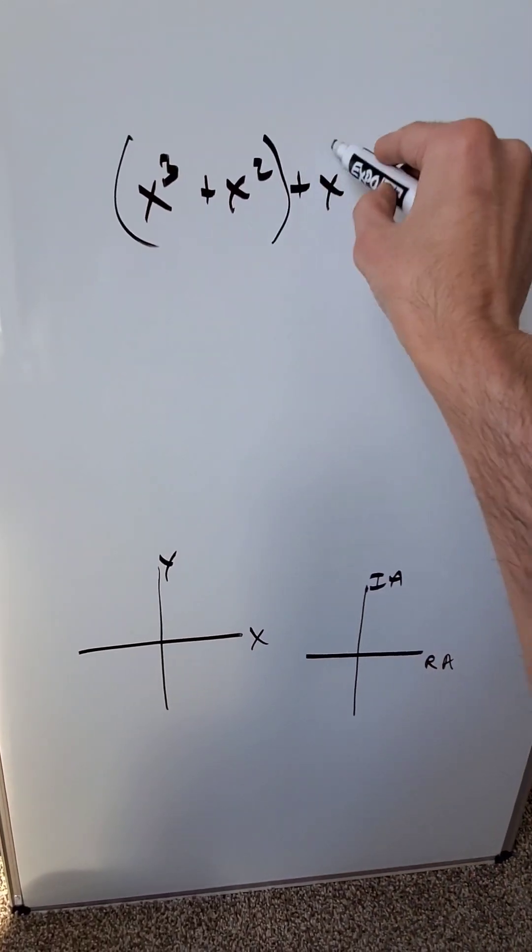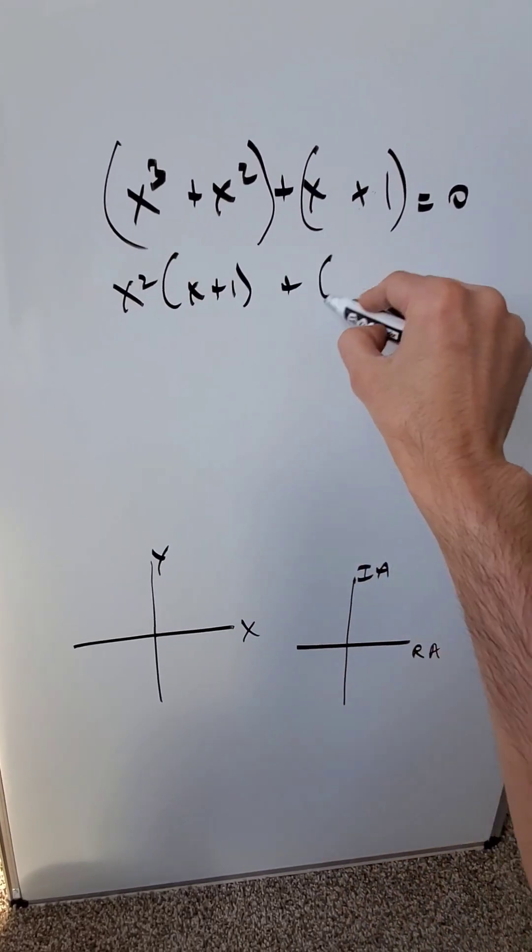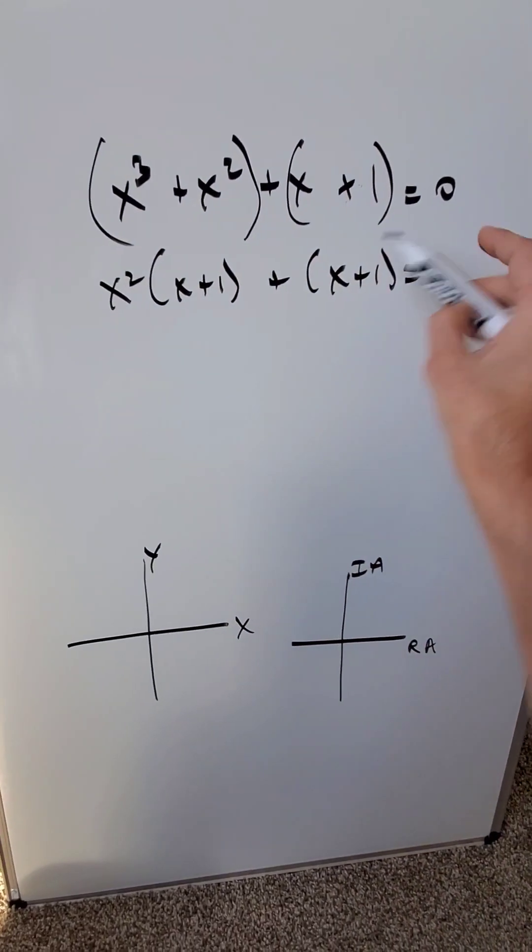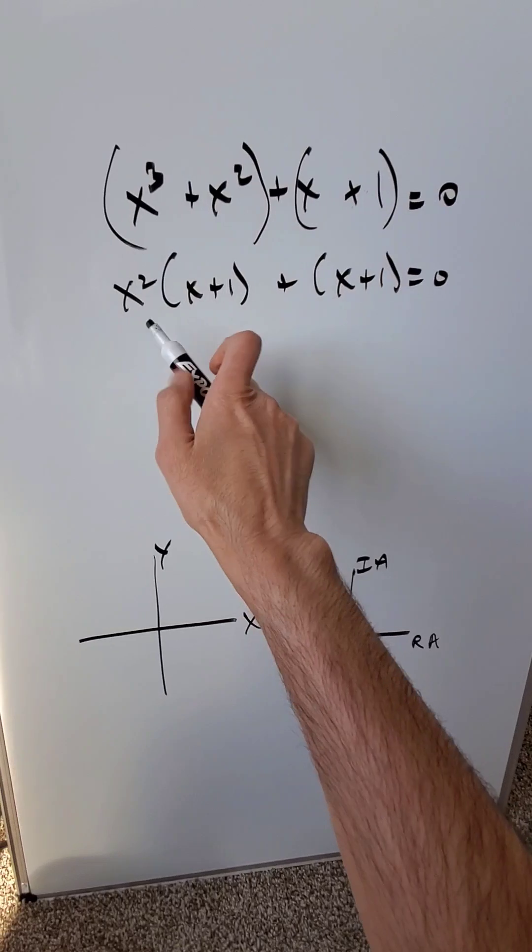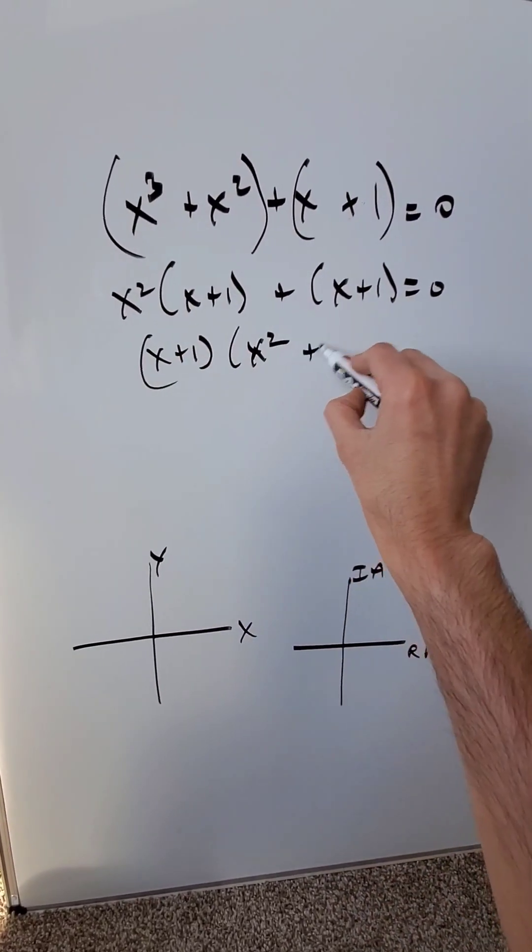You can do factoring by grouping and you know this technique. From here you're getting x squared into x plus one. Here you keep it as this, but now when you look at it from a general overview, you can isolate x plus one and it's coming here x squared plus one times x plus one.